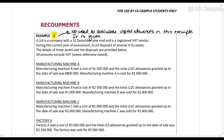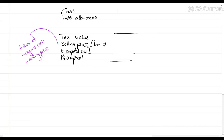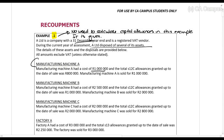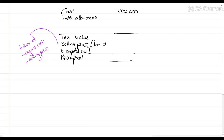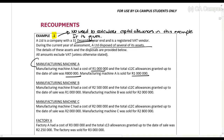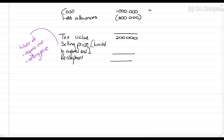So, I-Learn is a company with a 31 December year end, a registered VAT vendor, that disposed of several assets in the year. Manufacturing Machine A had a cost of one million rands. The total section 12C allowances granted up to the date of sale is 800,000 rands, giving a tax value of 200,000 rands. It was sold for one million rands — the same as its original cost.